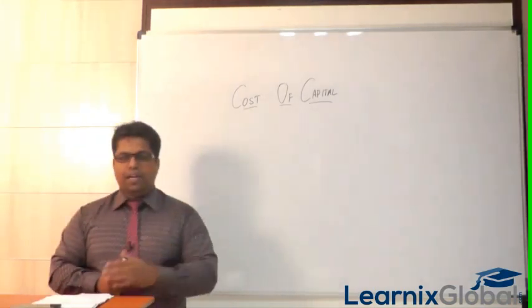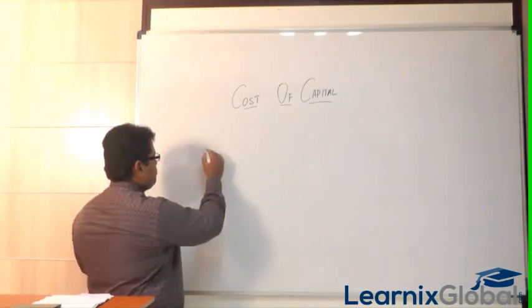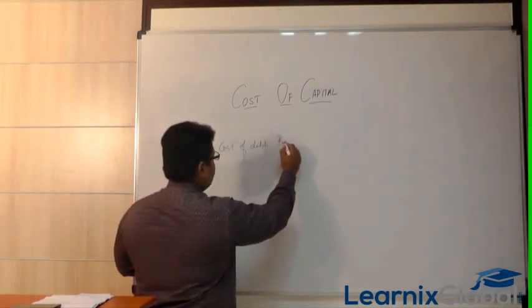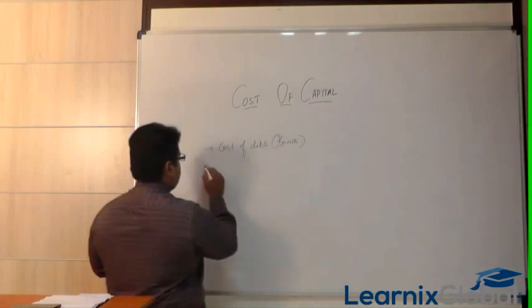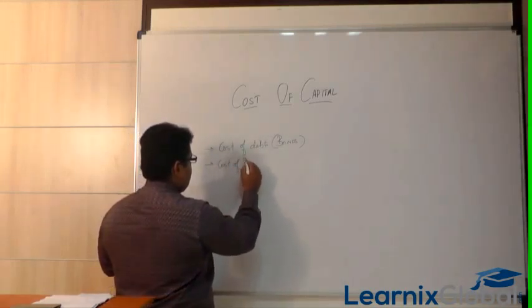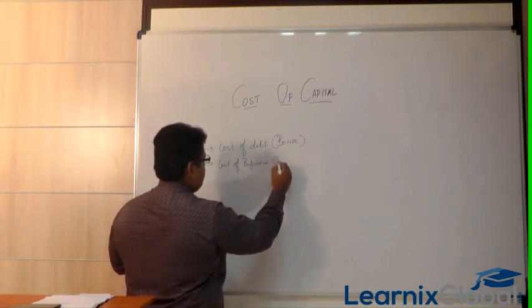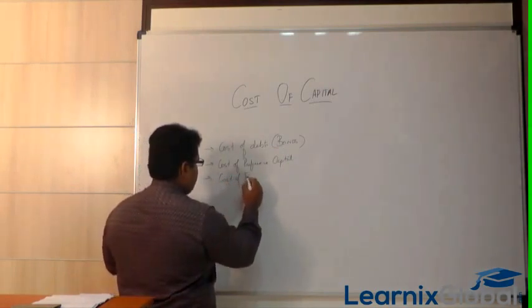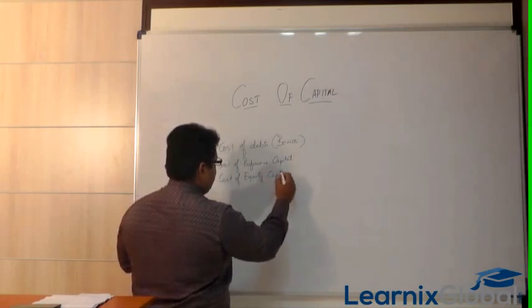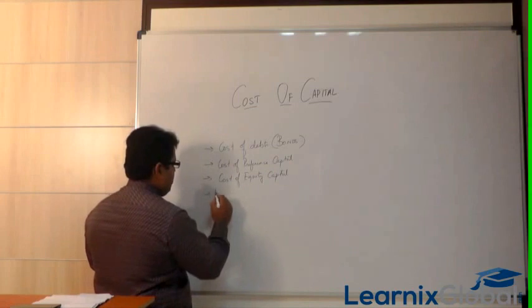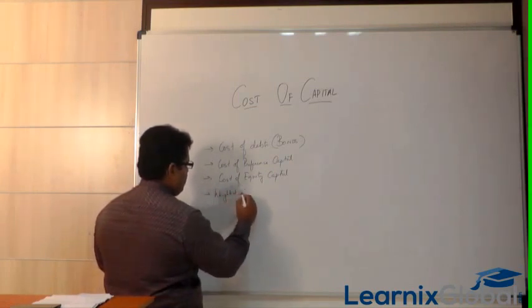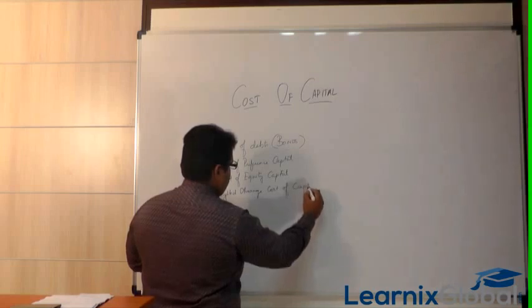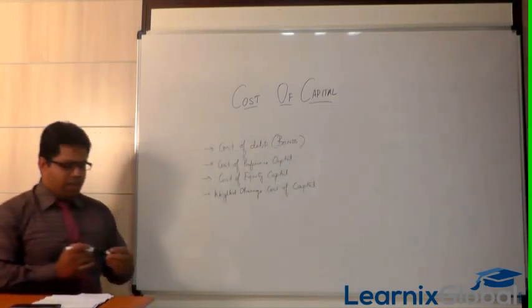In the case of cost of capital, we have the following types: first is cost of debts, that is for bonds; then cost of preference capital; cost of equity capital; and finally the weighted average cost of capital. These are the four things involved in the cost of capital.